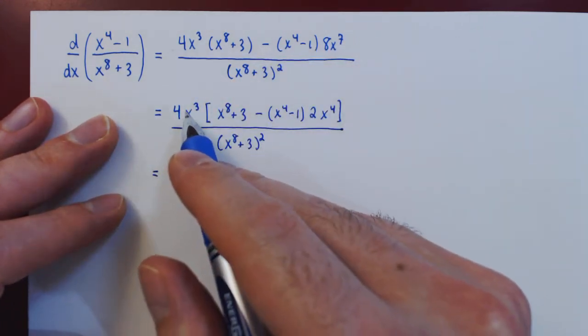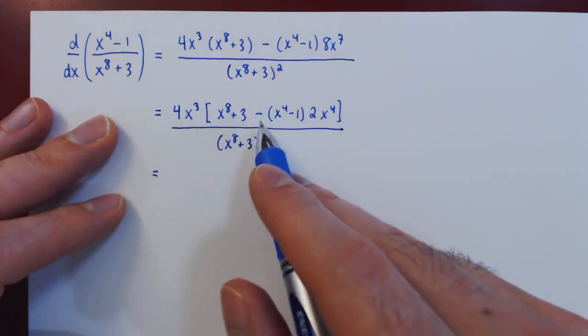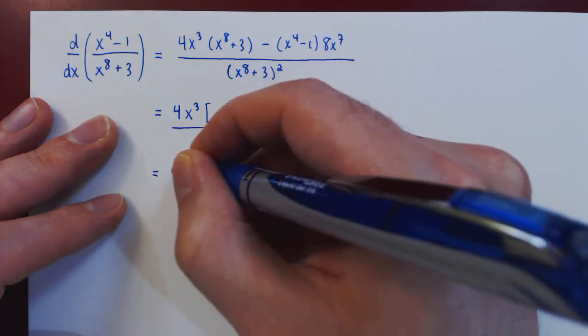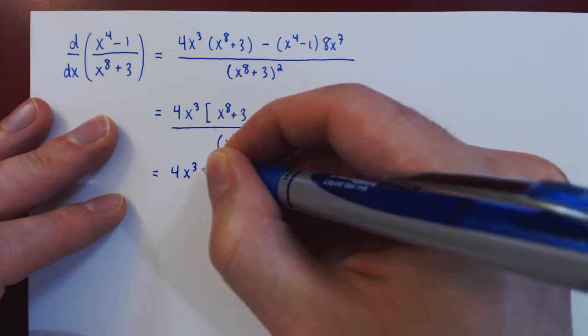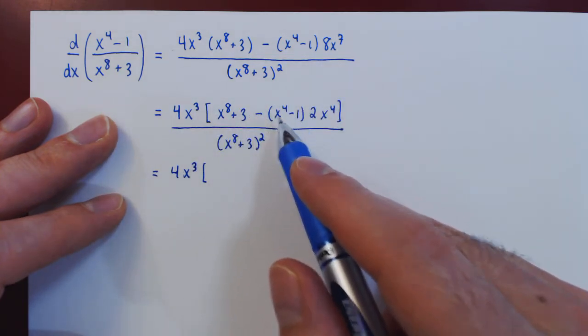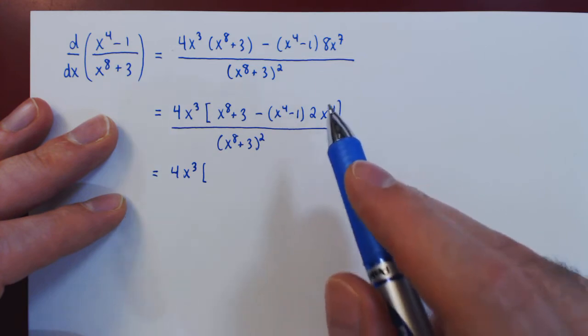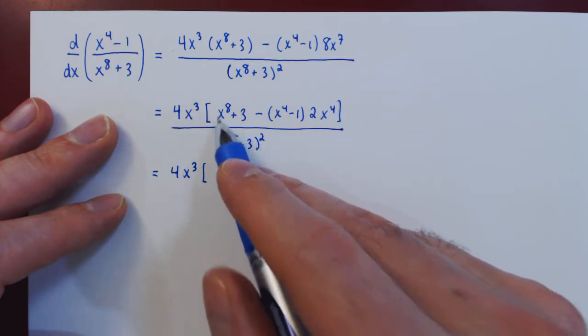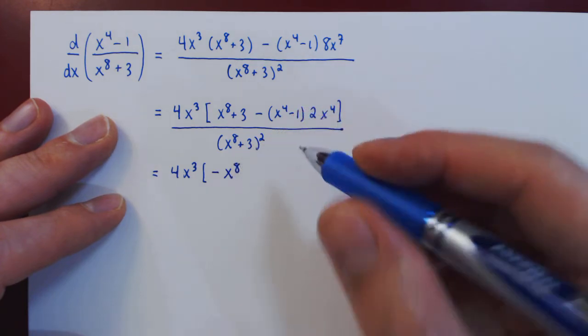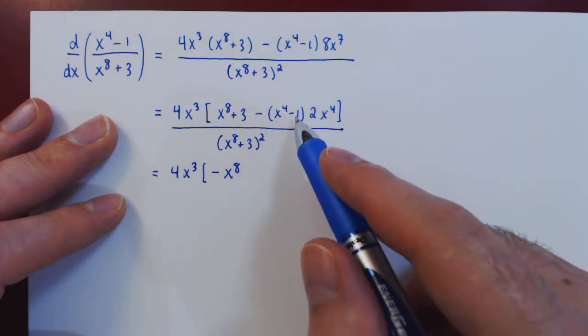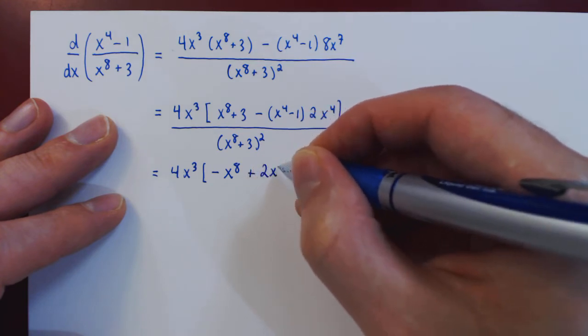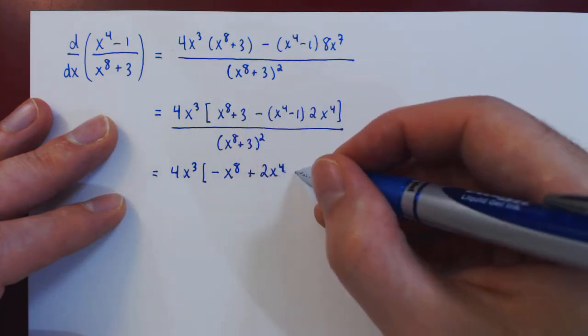Now that we factored what we could, we can now multiply things out and then regroup similar terms. So we have an x to the 8, then minus x to the 4 times 2x to the 4 is minus 2x to the 8, so we're left with minus x to the 8. Then we have negative negative 1, so positive 1 times 2x to the 4, so positive 2x to the 4. And we have the leftover plus 3.